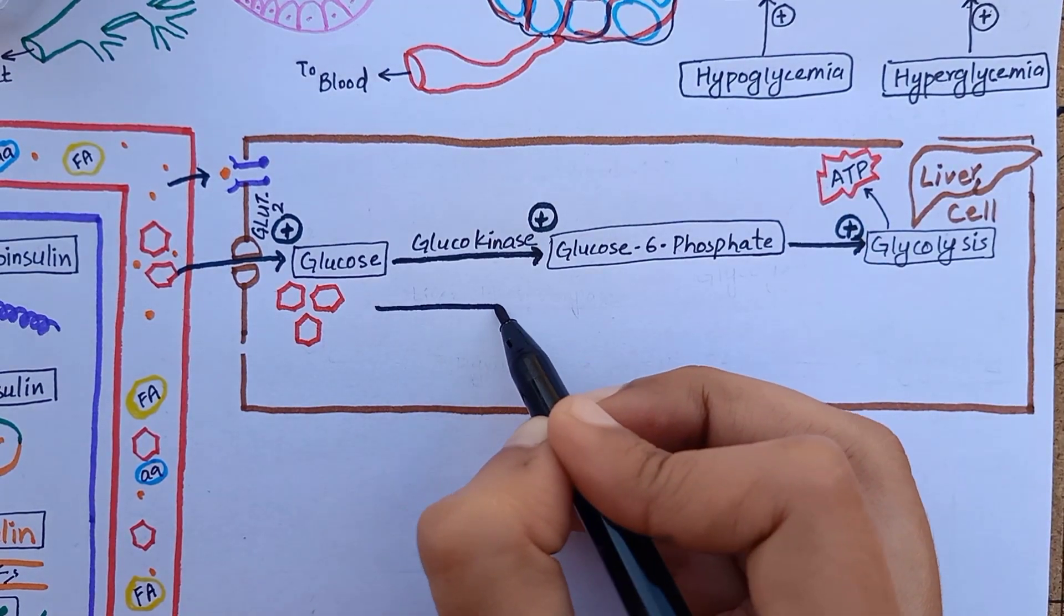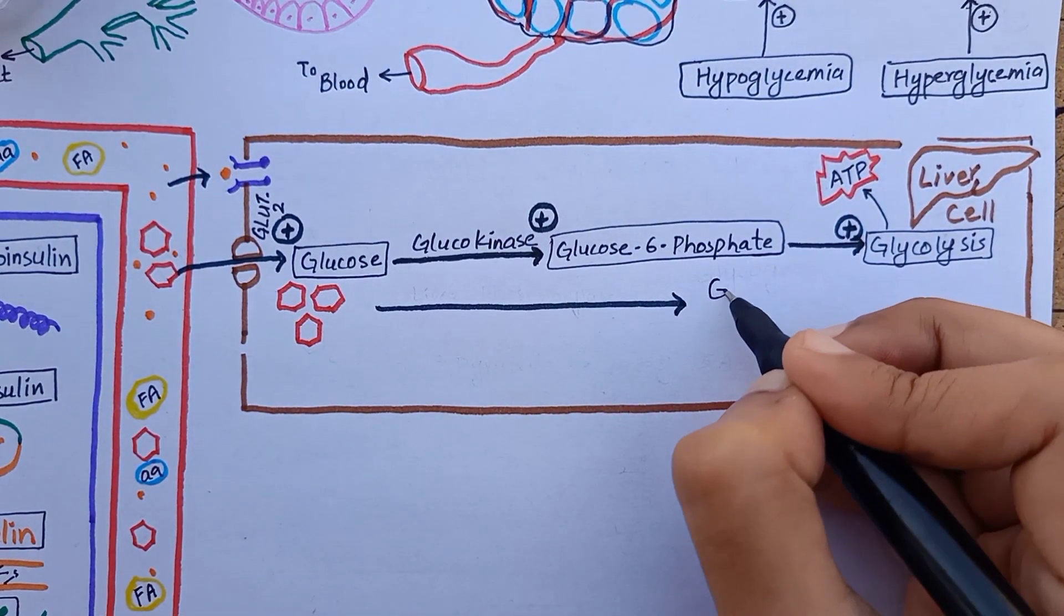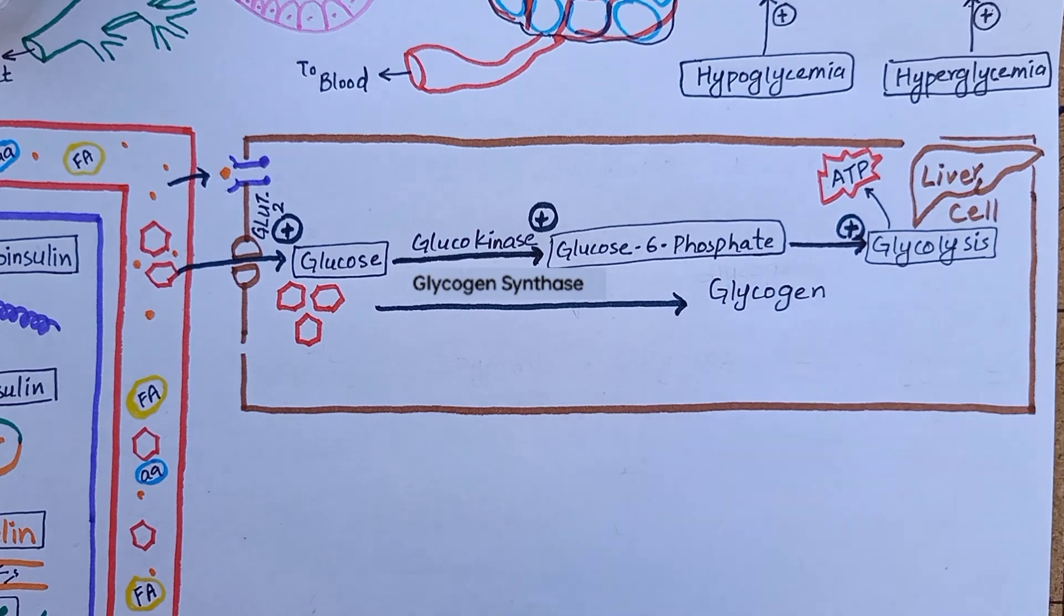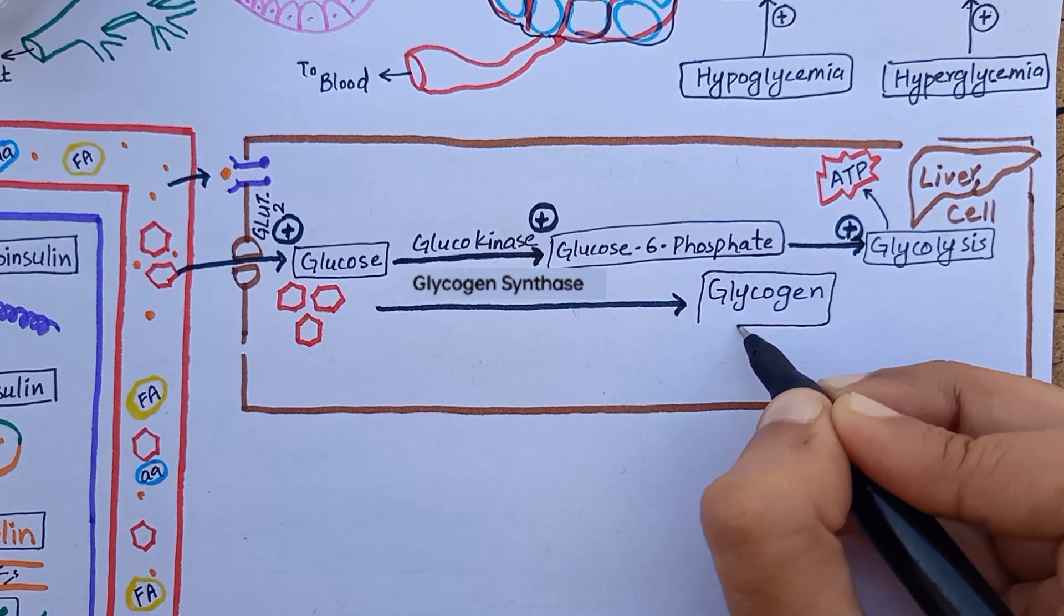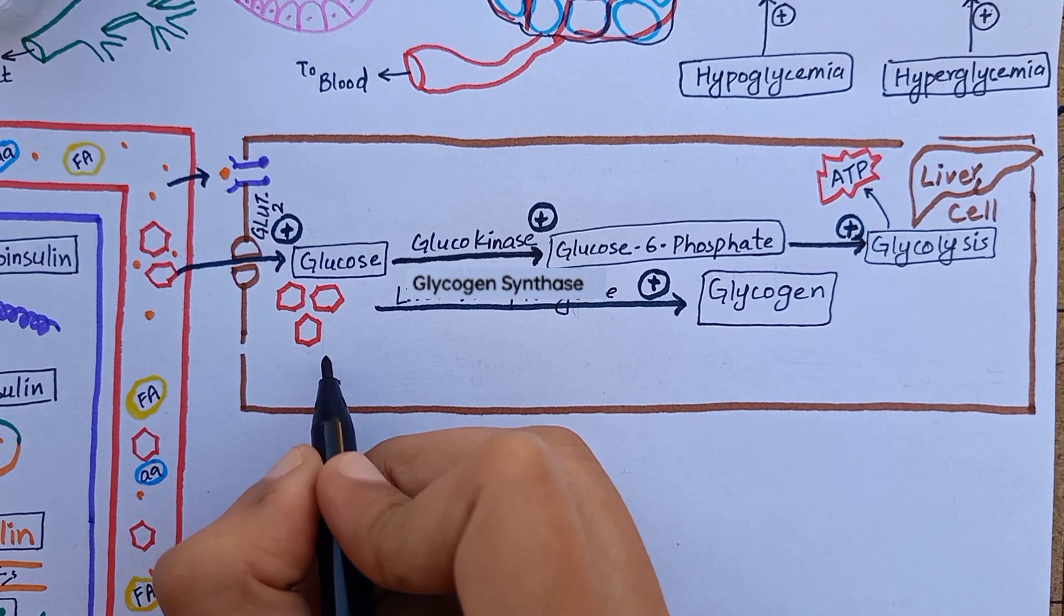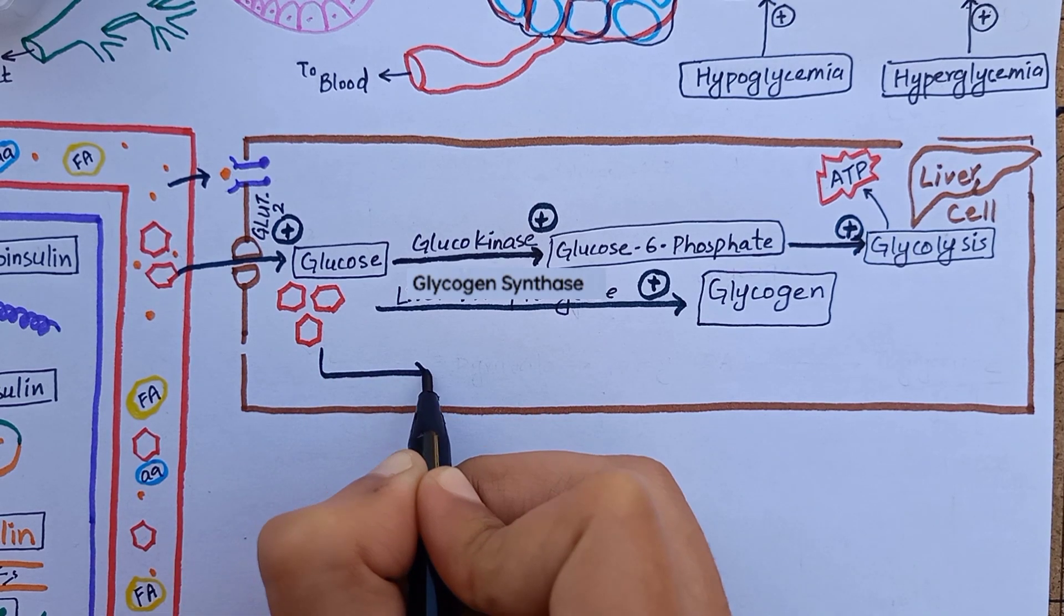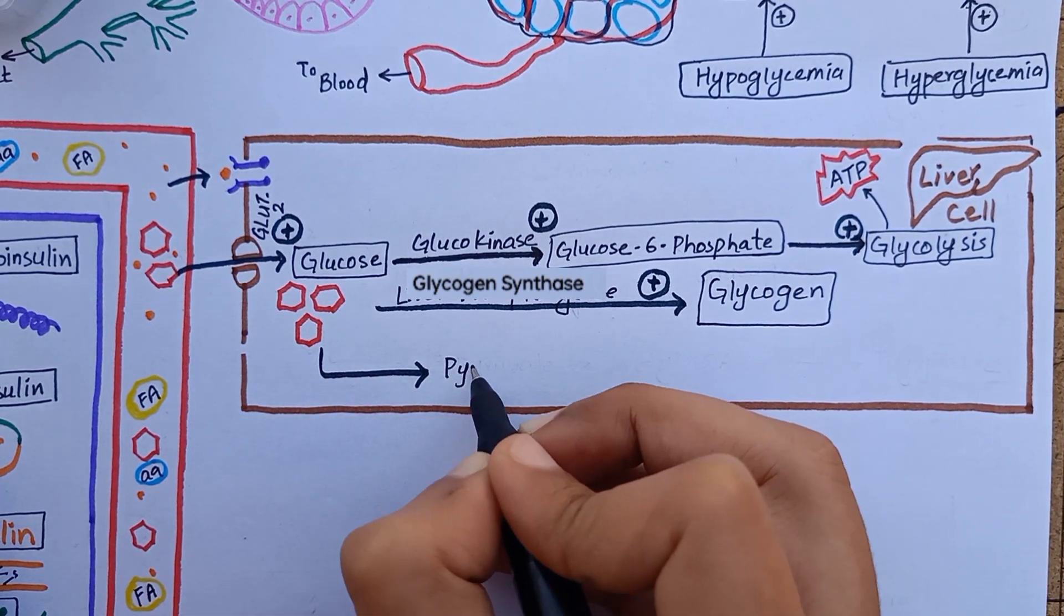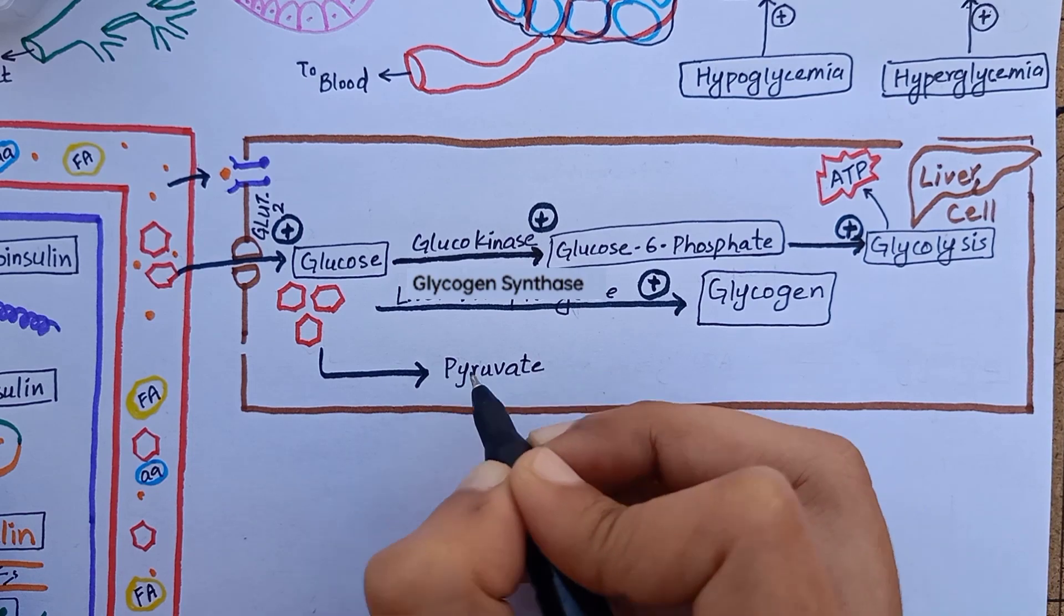Insulin also increases the activity of enzyme glycogen synthase, which is responsible for polymerization of monosaccharide units of glucose to form glycogen molecule. After liver glycogen concentration reaches up to a certain level, further glycogen synthesis is stopped. All the additional glucose is then available to form fat.